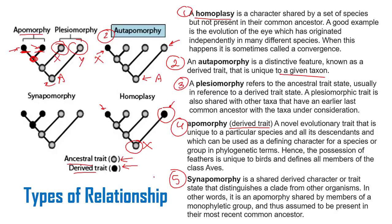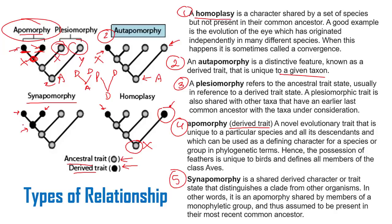Synapomorphy is a shared derived character or trait. The difference between apomorphic and synapomorphic is that in synapomorphy, the derived character is shared by terminal taxa whose ancestor also had that character. In apomorphy, the terminal taxon has the character but their ancestor does not. So the difference is: apomorphic — derived, derived, but the ancestor in the center is not derived; synapomorphic — derived, derived, and the ancestor is also derived.